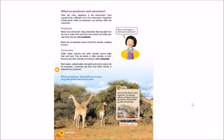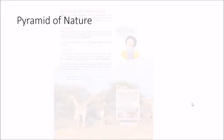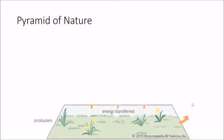I would like to summarize these two features in a very simple kind of diagram, and I hope that it will be easier for you to understand. At the base of the Pyramid of Nature, we have the producers.